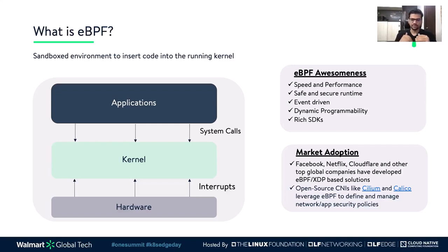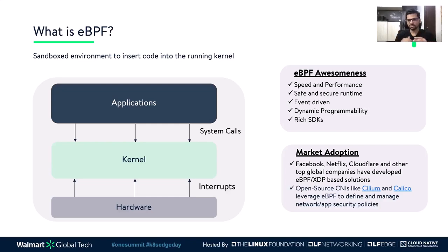We also have hardware devices like network cards, disks, and USBs. These hardware devices send interrupts to tell the kernel that certain data is ready to process — for example, when a packet arrives at the NIC or when data is available for reading on the disk. The kernel handles all these events. Traditionally, extending kernel functionality meant building custom kernel modules or submitting a patch upstream and waiting for the next kernel release.